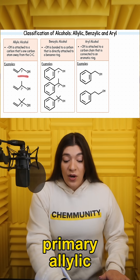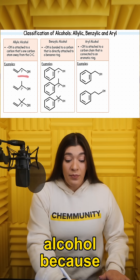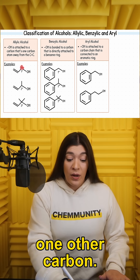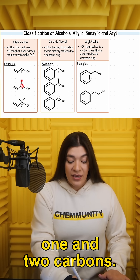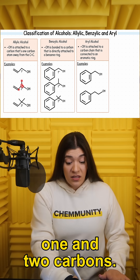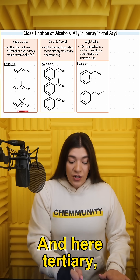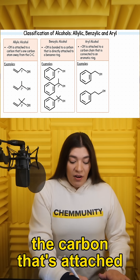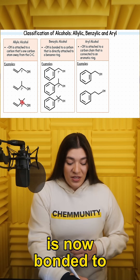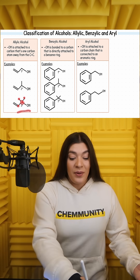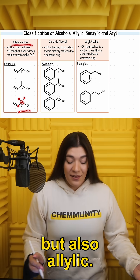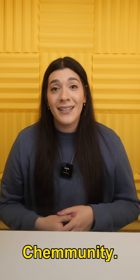This is a primary allylic alcohol because it's only connected to one other carbon. This is secondary because now it's connected to one and two carbons. And here, tertiary — the carbon that's attached to the OH is now bonded to one, two, and three carbons, making it tertiary, but also allylic. I have everything you need to pass this class — just check it out on community.